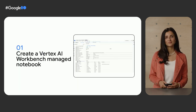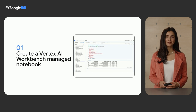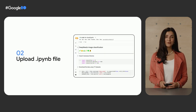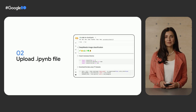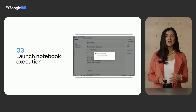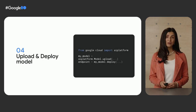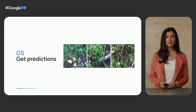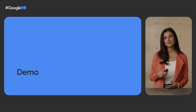Here are the five steps we'll take. First, we'll create a managed notebook instance on Google Cloud using Vertex AI Workbench. Next, we're going to download our Colab notebook as a .ipynb file and then upload it to our Vertex AI Workbench notebook. Then, we'll launch an execution of our notebook, which means the notebook will be run cell-by-cell in the cloud on the Vertex AI managed training service — we won't need to manually execute the cells. Next, we'll deploy the model to an endpoint, and finally, we'll use this endpoint to get some predictions. So let's jump over to a demo and I'll show you how all of this works.